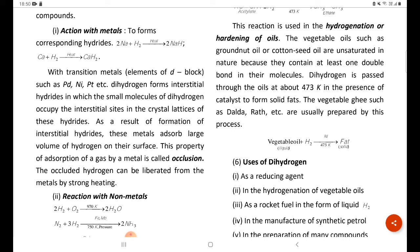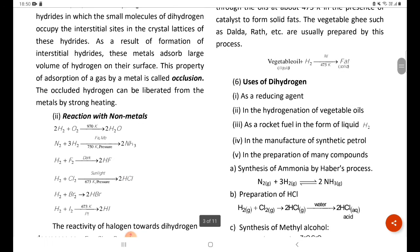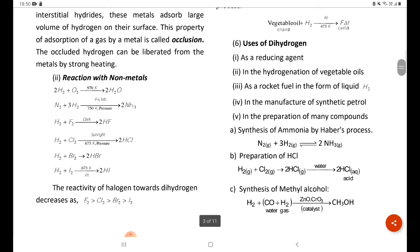Uses of dihydrogen: as a reducing agent, in the hydrogenation of vegetable oils, as a rocket fuel in the form of liquid H2, in the manufacture of synthetic petrol, in the preparation of many compounds. Synthesis of ammonia by Haber's process: N2 plus 3 H2 gives 2 NH3.